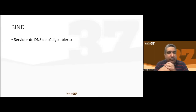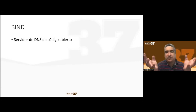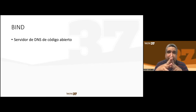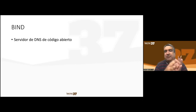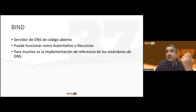Now we're going to see an example with BIND — an open source DNS server. The idea is not to explain how DNS works, but to show how to configure it, execute it, and check whether it's running — to demonstrate how this is done in the console. BIND can run authoritatively or recursively and is a reference implementation for DNS standards. Some DNS RFC standards were written in the 1980s, and when they are ambiguous, people look at what BIND does as the reference.